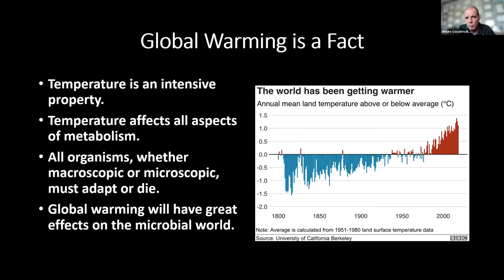The world is getting warmer — this is scientific consensus and we're living through it. Extreme weather events are the result of a warmer climate. Temperature affects all aspects of metabolism, from the cell membrane to replication to every enzyme. So all organisms, whether microscopic or macroscopic, must either adapt or die. Global warming is going to have great effects on the microbial world.